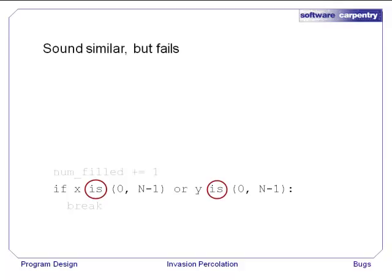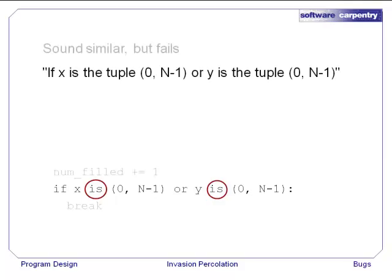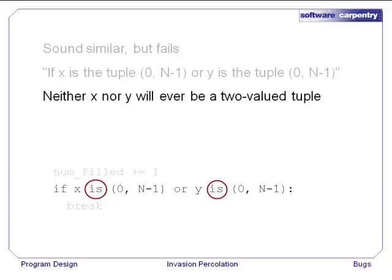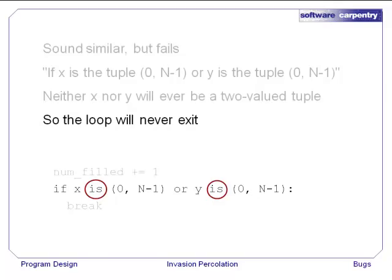This expression sounds similar but fails. If x is 0 or n minus 1, or y is 0 or n minus 1, why does this fail? This checks to see whether the value of x is the two element tuple 0, n minus 1, or y is the two-valued tuple 0, n minus 1. But since x and y are always integers, neither will ever be a two-valued tuple, so both halves of the or will always fail and we will never exit the loop.